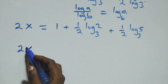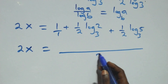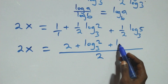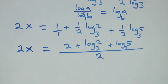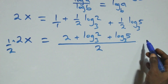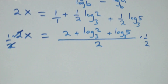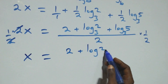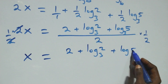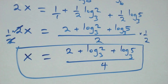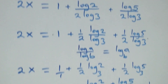What we have now becomes: 2x equals to 1 plus one-half·log₃2 plus one-half·log₃5. We then multiply both sides by one-half to remove the 2; these two cancel each other and we are left with x, which equals (2 plus log₃2 plus log₃5) over 4. So the value of x in this problem is (2 + log₃2 + log₃5) / 4.